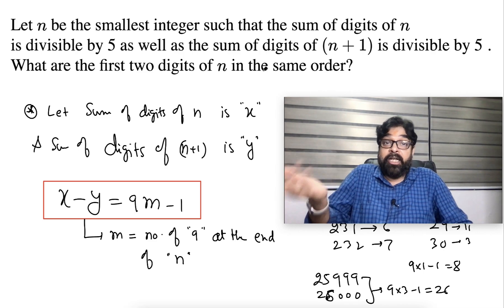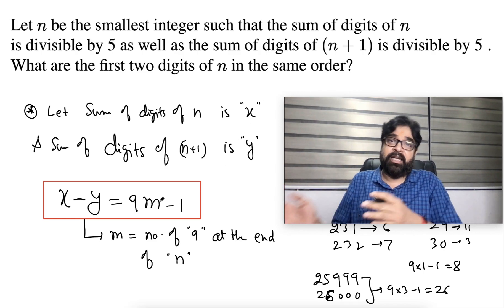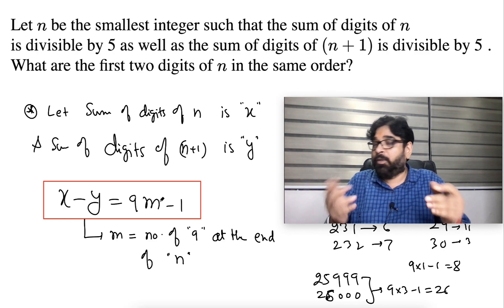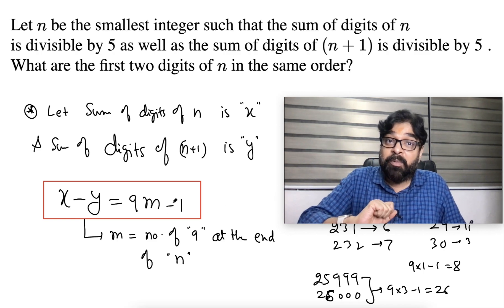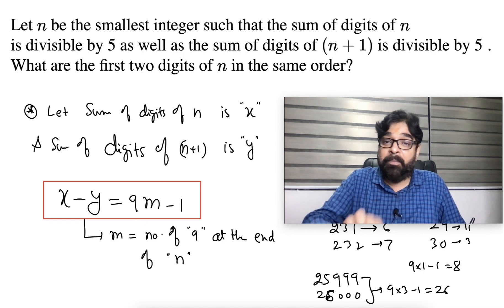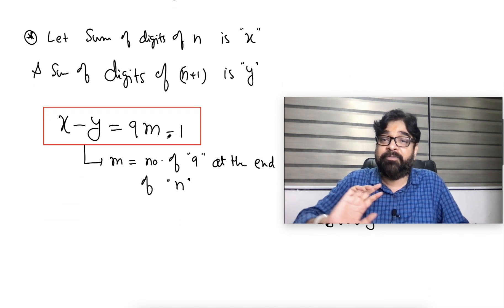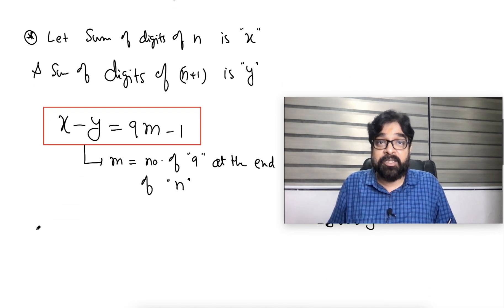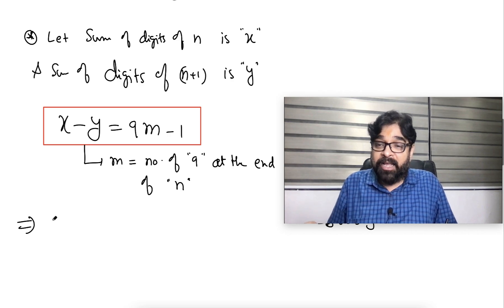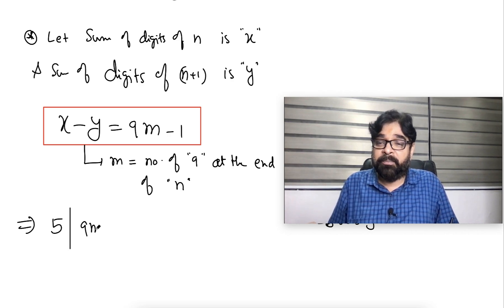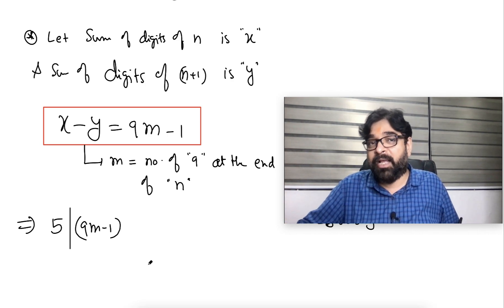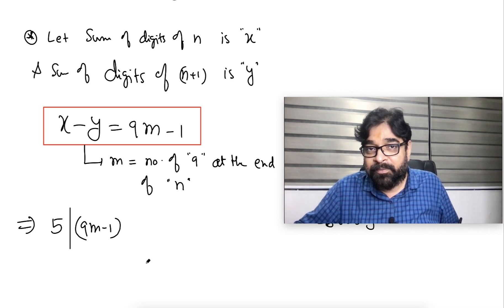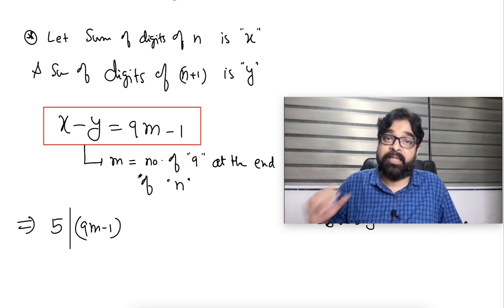But, according to question, x is divisible by 5, that is okay. y is also divisible by 5, that is also okay. x minus y should be divisible by 5, means 9m minus 1 must be divisible by 5. 9m minus 1 means 5 must divide 9m minus 1. So yes or no, 5 must divide 9m minus 1, m is what, number of 9 at the end.